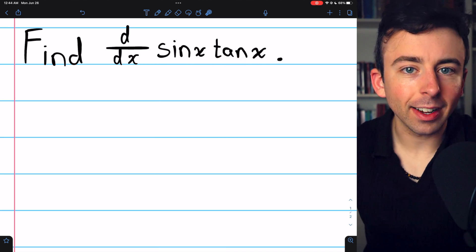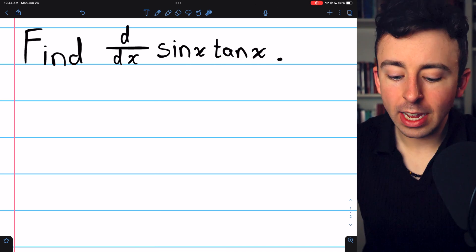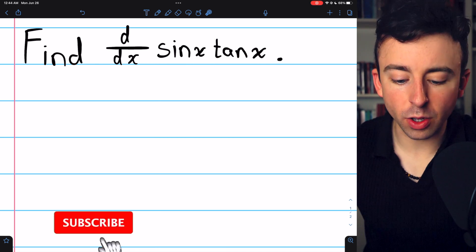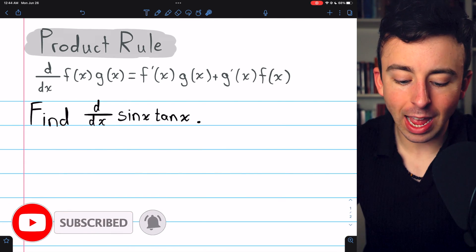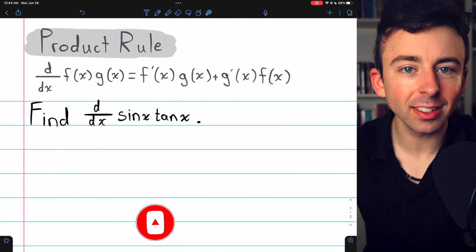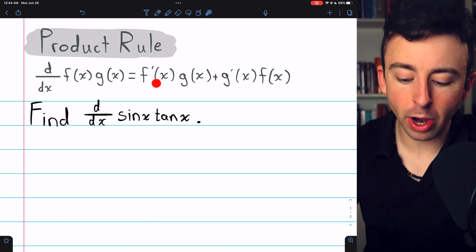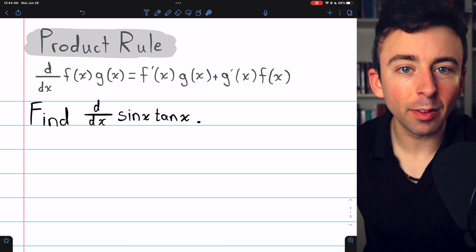Sine x times tangent x is a product of functions. So to take its derivative, we'll need to use the product rule, which tells us the derivative of a function f(x) times g(x) is equal to f prime g plus g prime f.